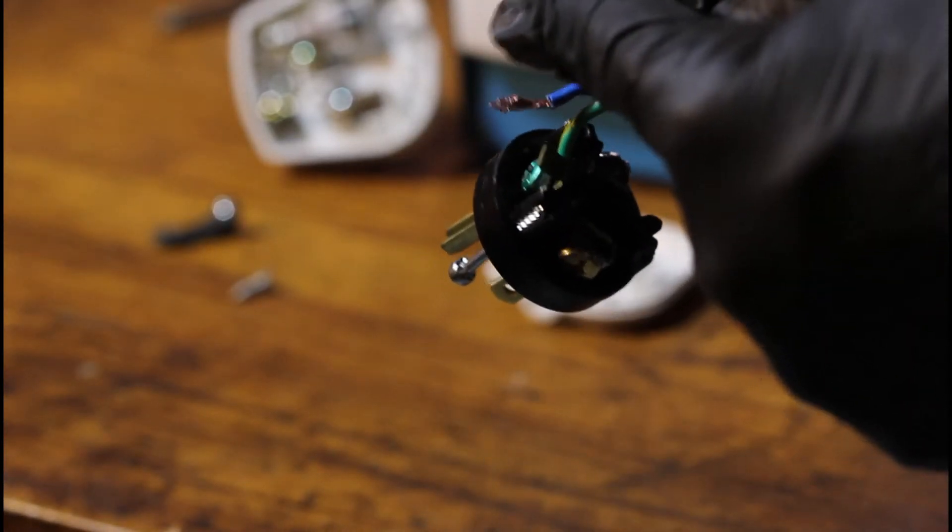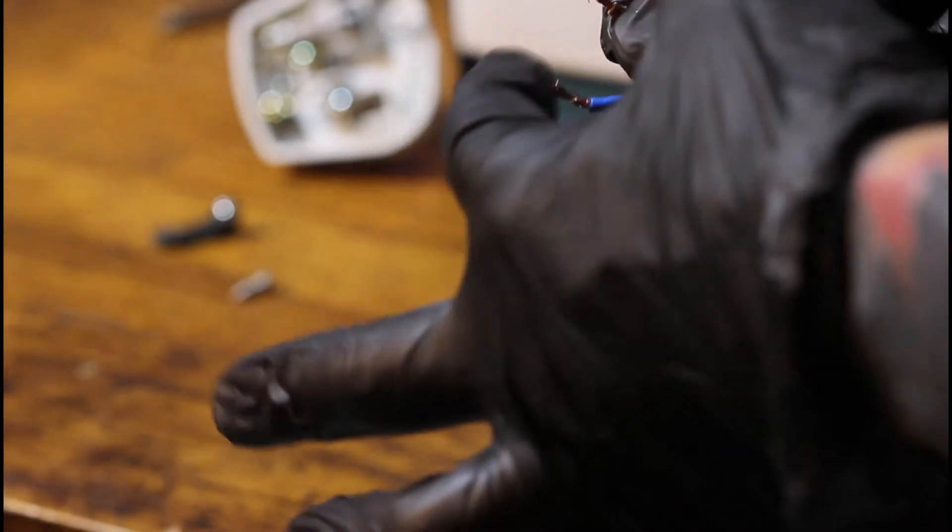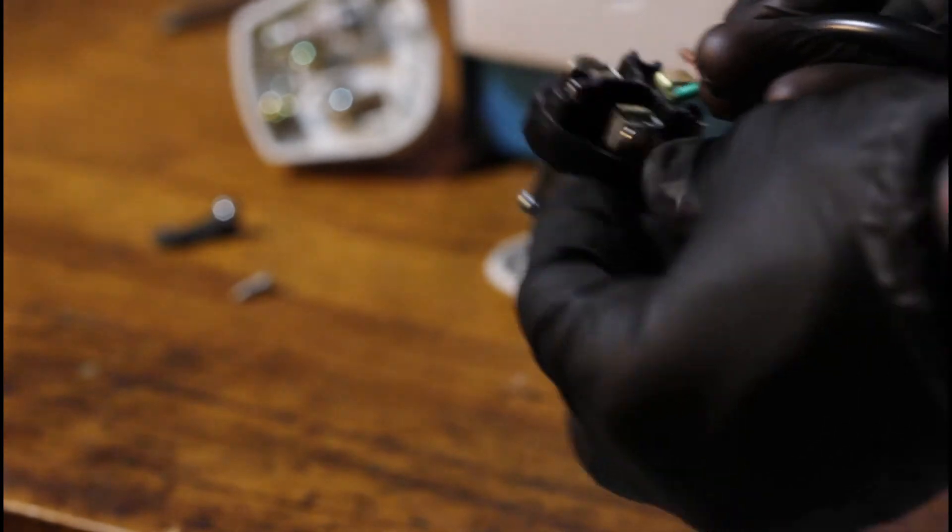The green which is ground always goes to ground and then you'll be taking the brown wire and connecting that to the brass which is hot. Blue will then go to the remaining nut.